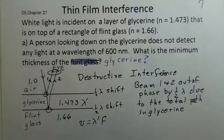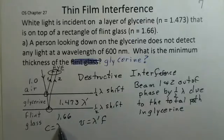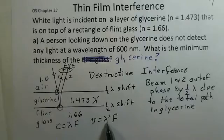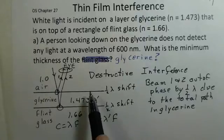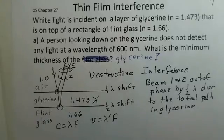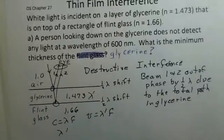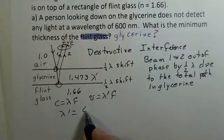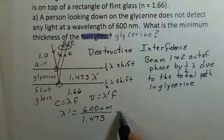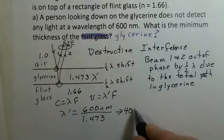We're in the glycerin, so I'll call the wavelength lambda prime. In a vacuum, c equals lambda times f. In the glycerin, we travel slower by a factor of n, the index of refraction, which causes the wavelength to be smaller by a factor of n. The frequency is constant whether we're in air, glycerin, or flint glass. So lambda prime inside the glycerin equals the wavelength in air divided by the index of refraction of the glycerin. That gives us 407.3 nanometers — the wavelength in the glycerin.